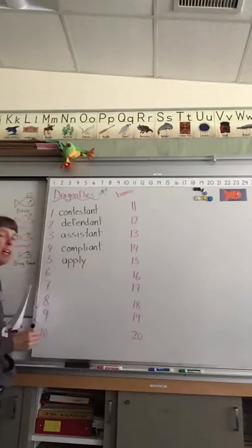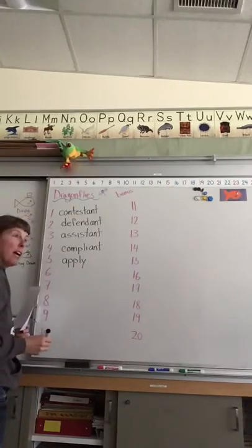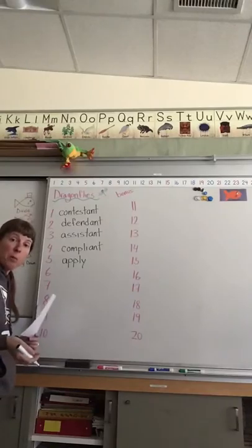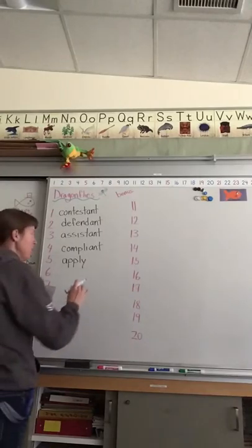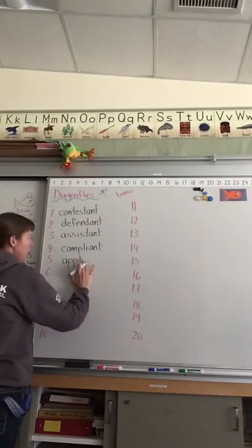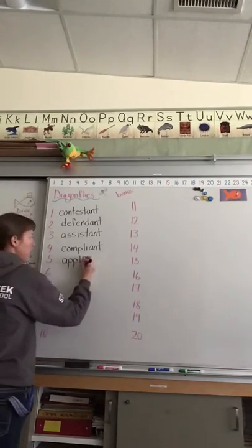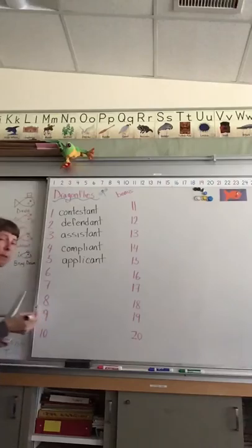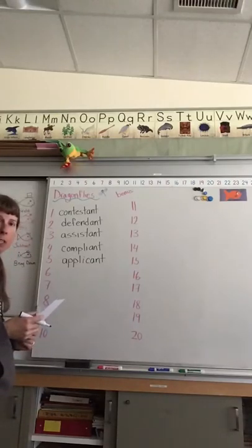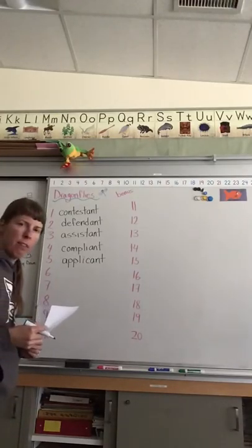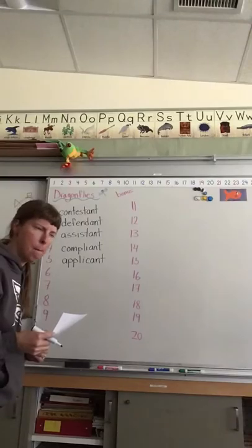Number four, compliant. Someone who is compliant is going to follow the rules. They're going to comply and do as they are asked. Compliant. Describing a person.